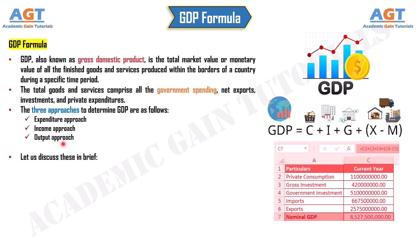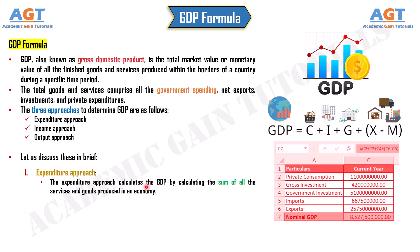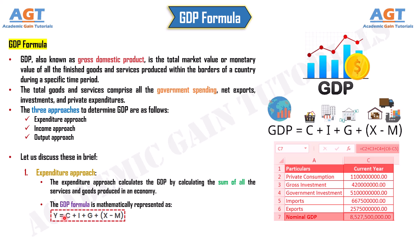Let us discuss these in brief. Number 1: Expenditure Approach. The expenditure approach calculates the GDP by calculating the sum of all the services and goods produced in an economy. The GDP formula is mathematically represented as Y = C + I + G + X - M.